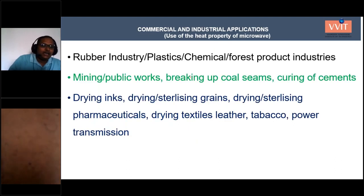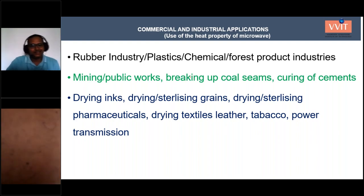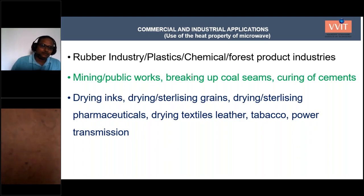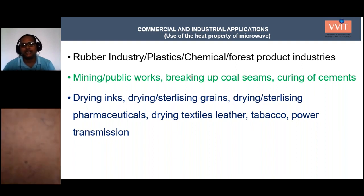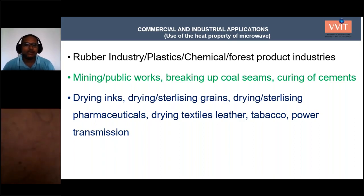In the rubber and plastic industries, microwave chambers are used — for example, in the tire industry to thread raw tires by melting and pasting rubber onto the wheel frame. Microwaves are also used in the chemical industry and forest product industries such as wood pulp and paper manufacturing.